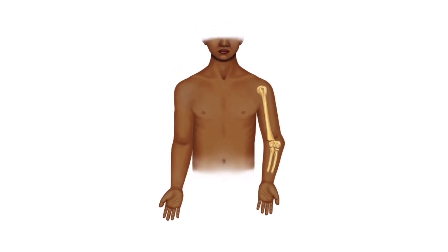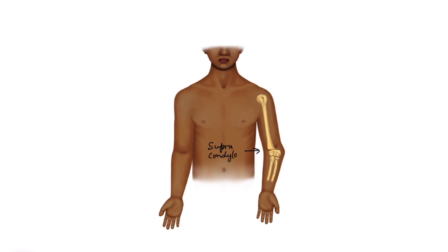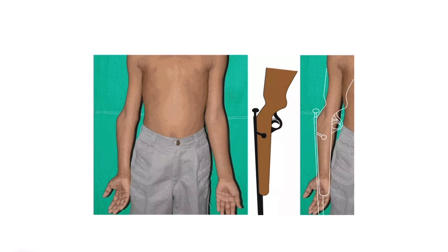Here you can see in this image a case of supracondylar fracture of the humerus. The condylar end has been displaced laterally and pushed back upwards. This child is suffering from a right-sided supracondylar fracture of the humerus. The fractured end of the humerus and the condylar portion are visible, with the condylar end pushed out laterally, backwards, and upwards, forming this angulation.